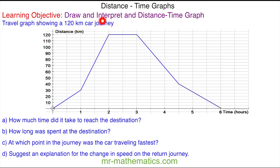Welcome to our lesson on interpreting distance-time graphs. Here we have a travel graph of a 120 kilometer car journey, and we're asked to work out how much time it took to reach the destination. You can see at this point the car is at home because it has zero distance away.